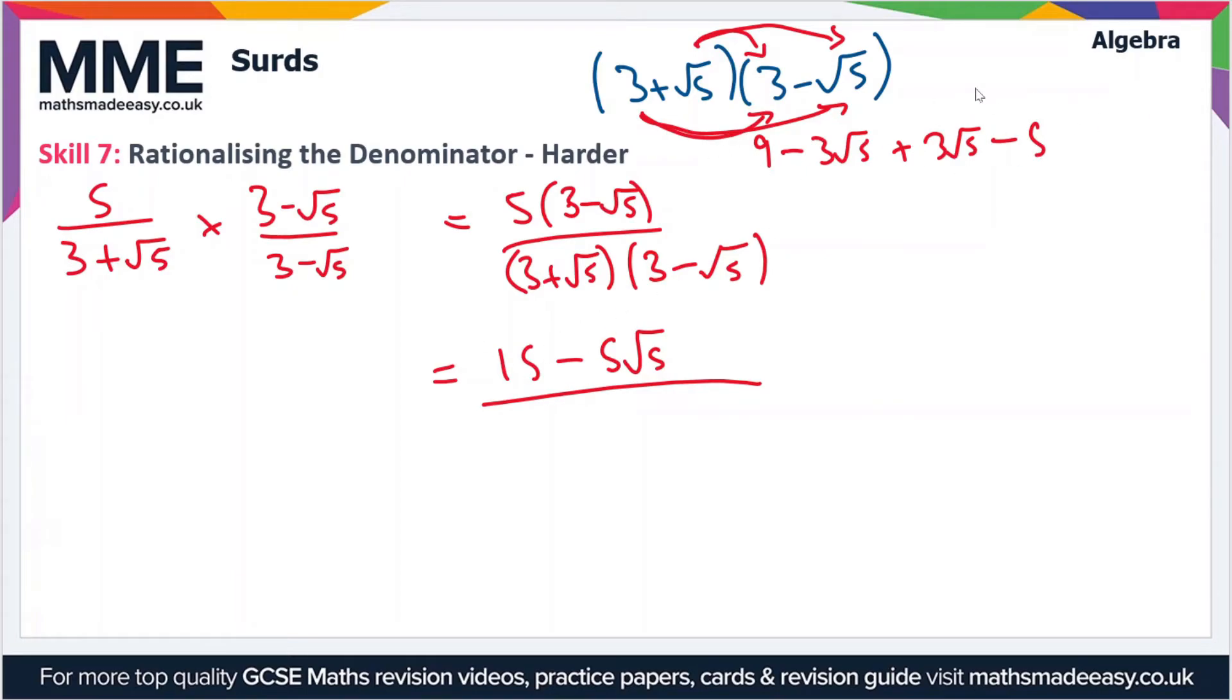So let's rewrite that in a simplified form. So we've got 9 minus 3 root 5 plus 3 root 5. So here the minus 3 root 5 and 3 root 5 cancel. So we're left with 9 minus 5. So we can simplify this again. This is equal to 15 minus 5 root 5 over 4.